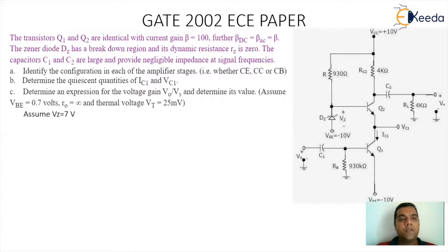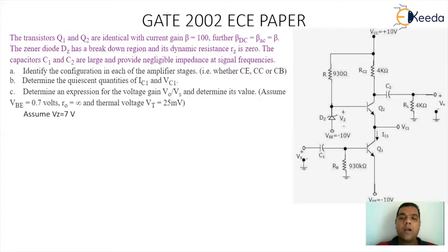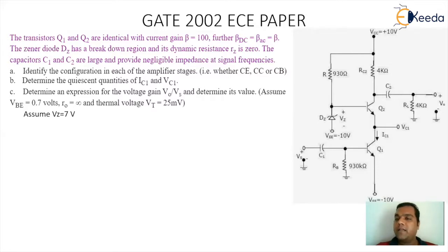Assuming VBE is 0.7V, small ro as infinity, and thermal voltage VT equal to 25 mV. If you observe the diagram carefully, for the lower transistor the input is given to the base and the output is taken from the collector. For the top transistor, the input is at the emitter and the output is at the collector. So basically it is a Darlington-type configuration using CE and CB configuration logic.